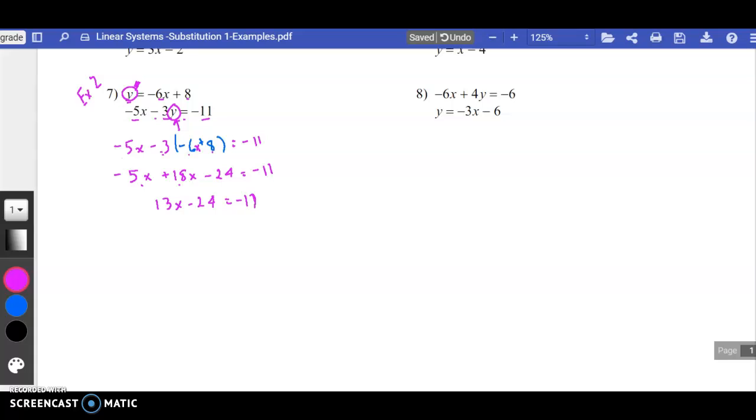Sorry, that should be 11. Looks a little bit like a 17, but it's not. So now I need to move the 24 to the right-hand side, so I add 24 to both sides. I have 13x equals negative 11 plus 24, which is a positive 13. Now, dividing both sides by 13, I have x equals 1.